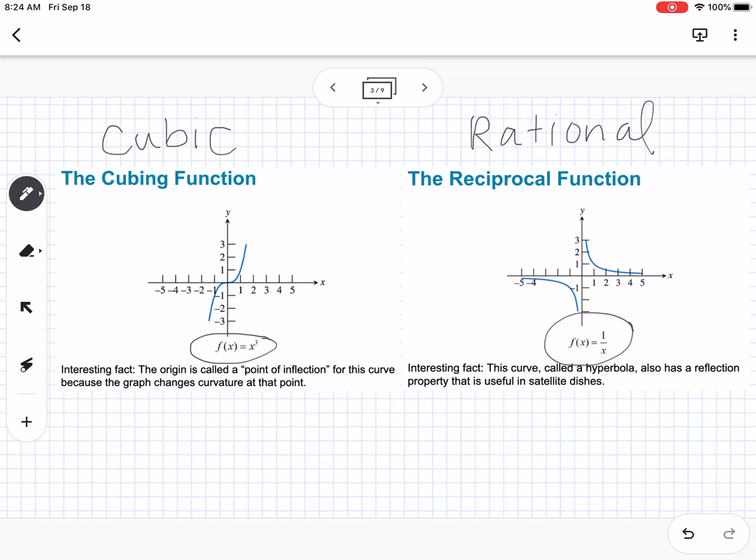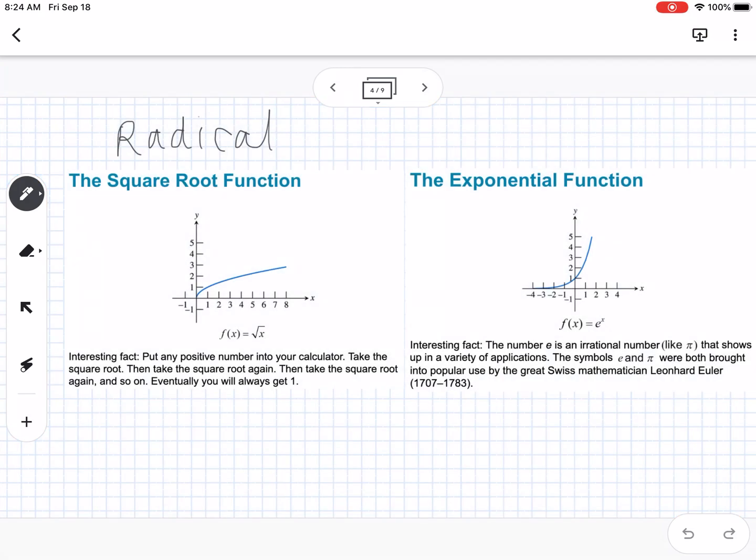The square root function, also called radical, has f(x) = √x. Interesting fact: put any positive number into your calculator, take the square root, then take the square root again, and so on. Eventually you'll always get to 1.